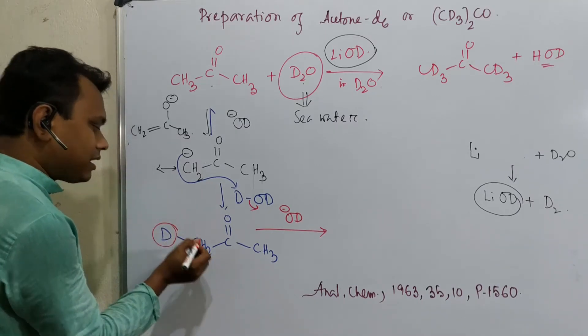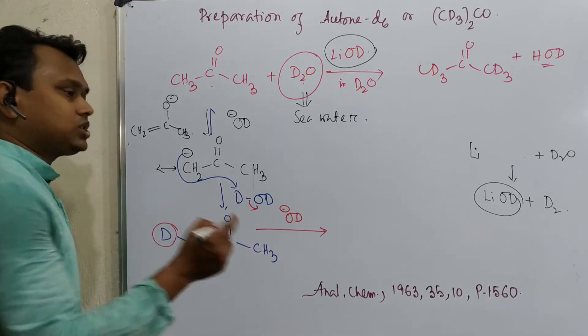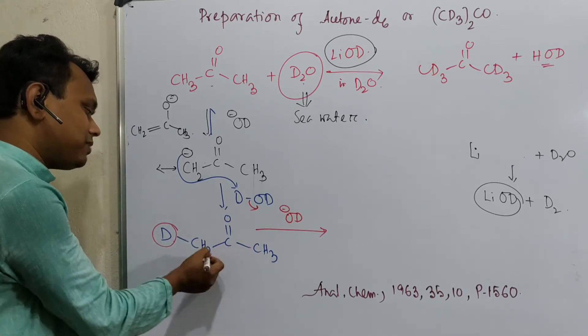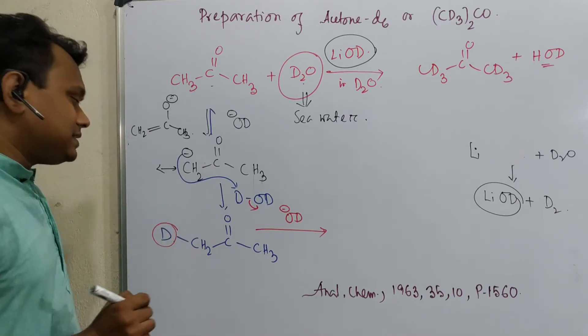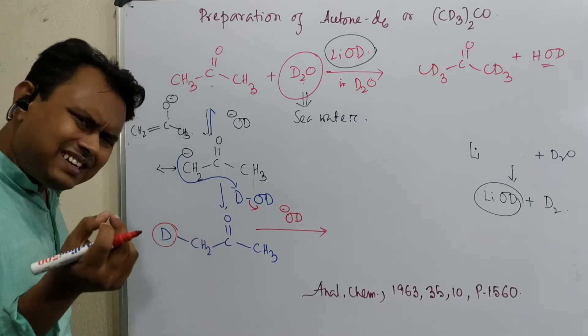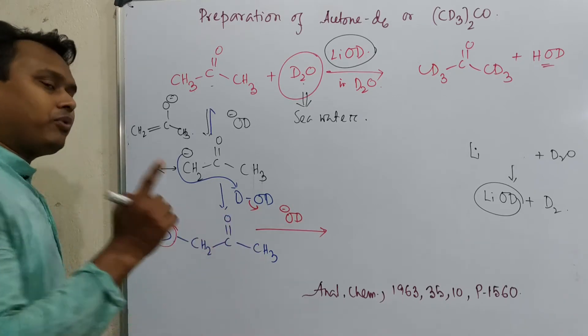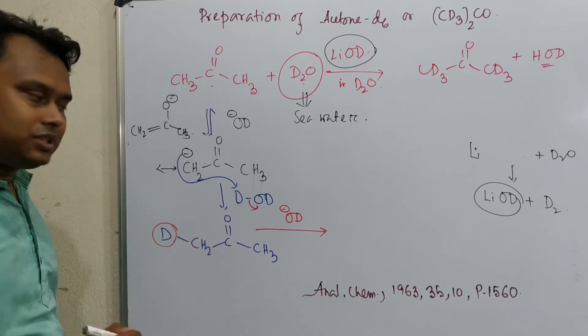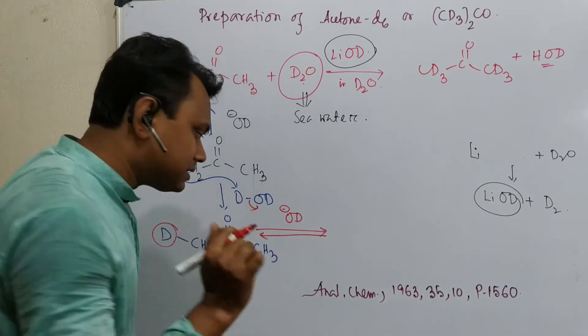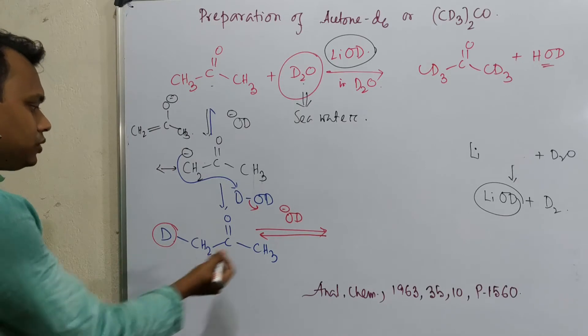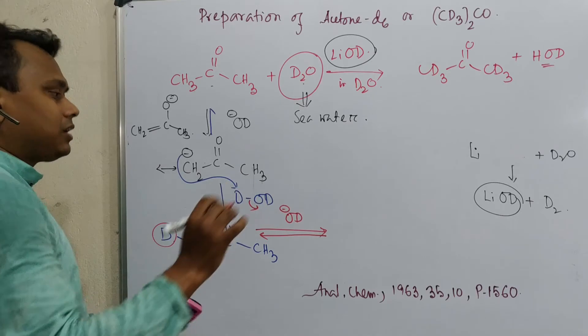That can abstract two things: it can abstract this proton or this hydrogen. Statistically, if you think there are 5 hydrogens, statistically there is more probability that 5 among 1 could be abstracted. Secondly, from a chemical reactivity perspective, this C-H bond is slightly more weaker compared to C-D. That's why both from statistical point of view and chemical reaction point of view, and since this is a reversible reaction, these small factors also dominate. So it can abstract anywhere from here. In this way, this reaction will continue.